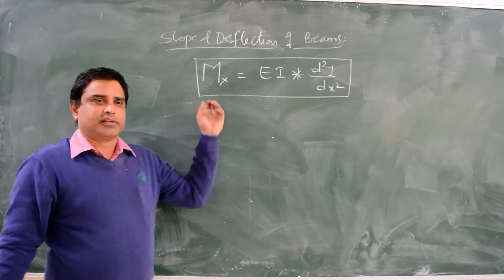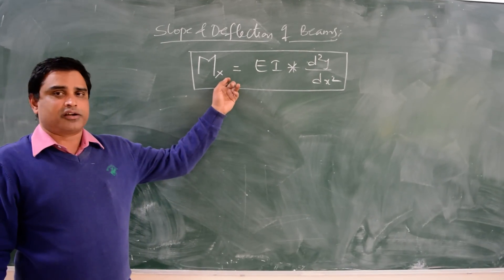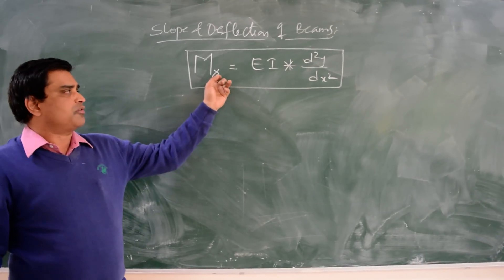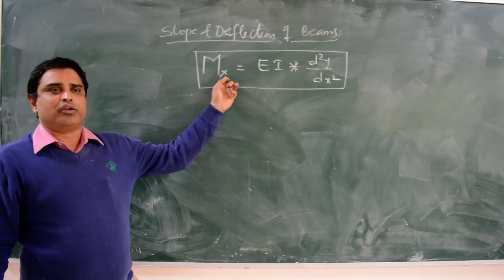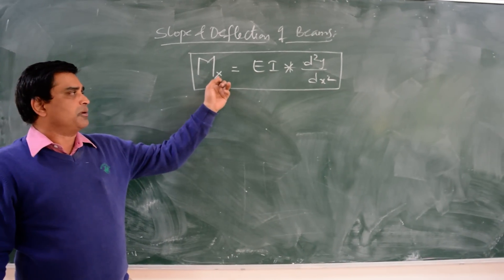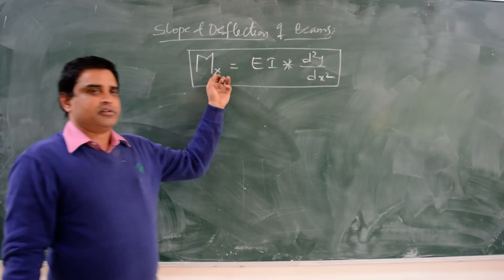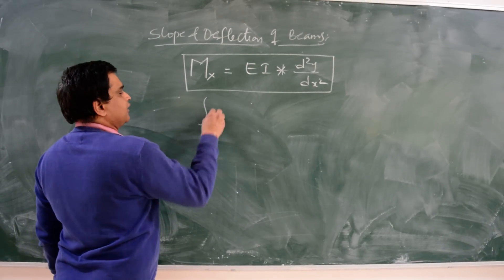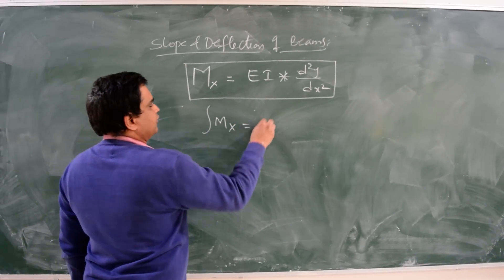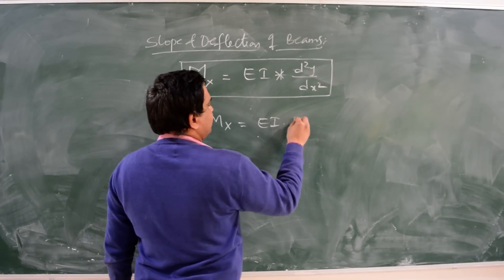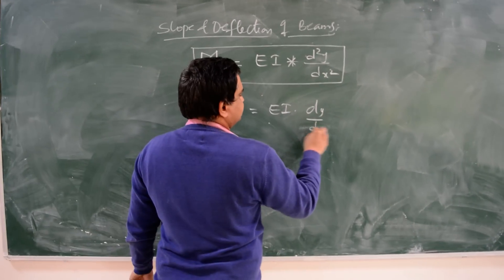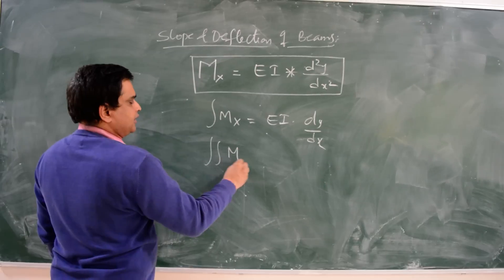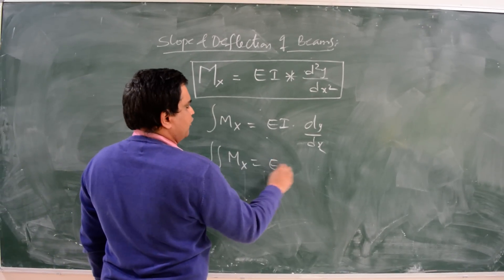This is the double integration method. When we integrate the bending moment two times it gives the value of deflection. If we integrate a single time it gives the value of slope. The first integration of the bending moment Mx gives the slope, and the double integration gives the value of deflection.